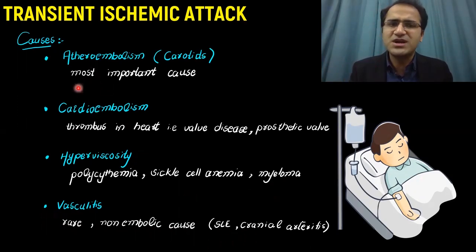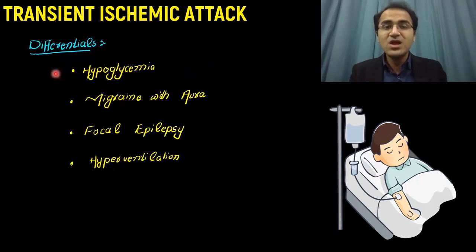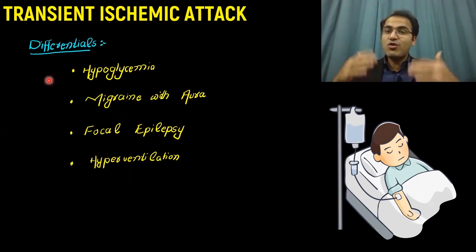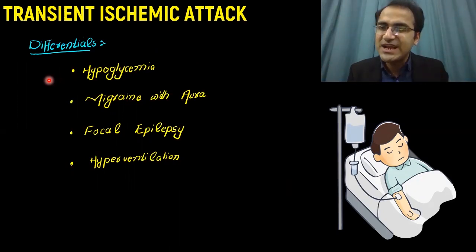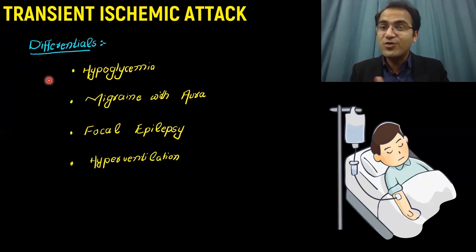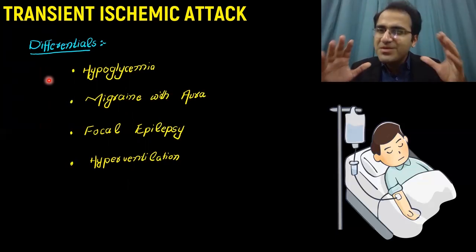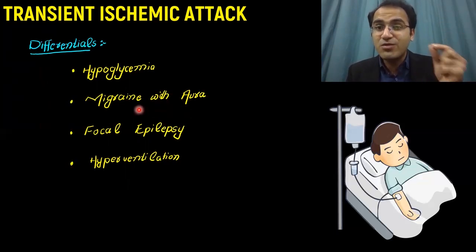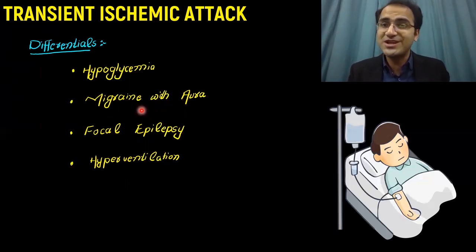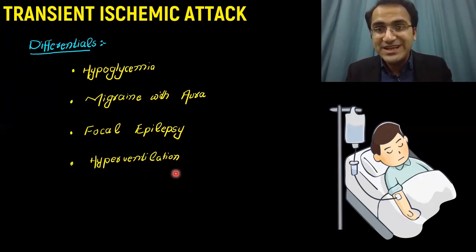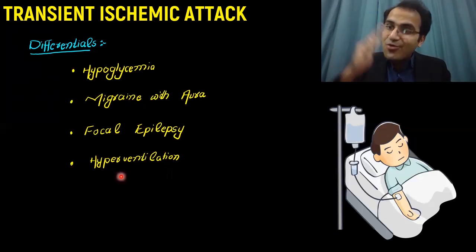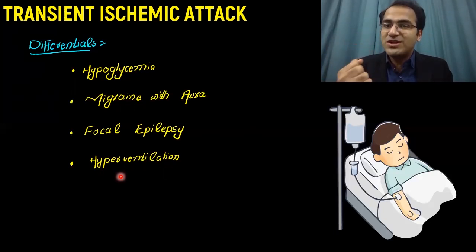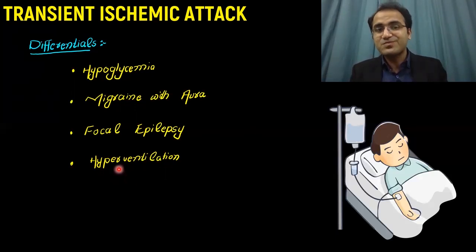Differentials: if a patient presents with a neurological deficit that suddenly resolves with no findings on CT and MRI, other conditions can mimic this. Hypoglycemia can present this way — after correcting hypoglycemia the patient gets totally better, mimicking TIA signs and symptoms. Migraine with aura can present with neurological deficits. Focal epilepsy is another differential. Hyperventilation can sometimes lead to hypocalcemia, which can cause spasms in the body that mimic a neurological deficit. These are the differentials to keep in mind.